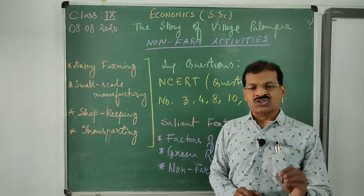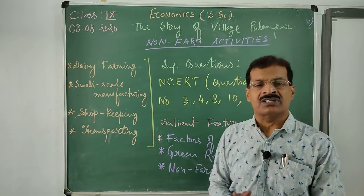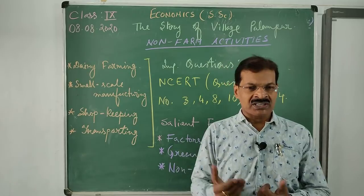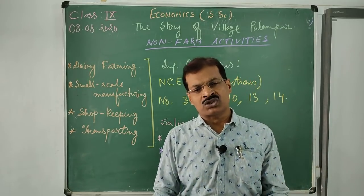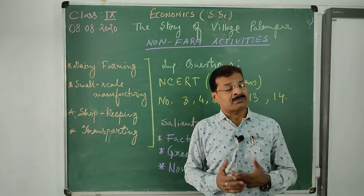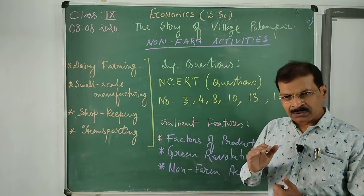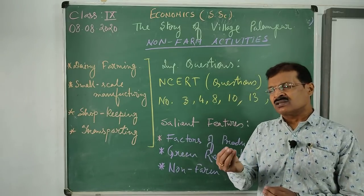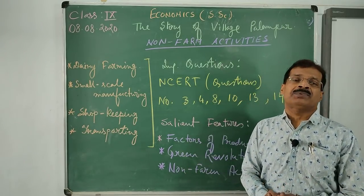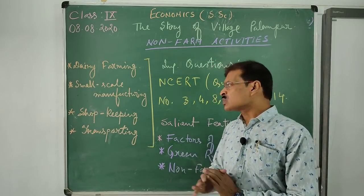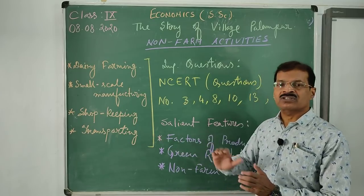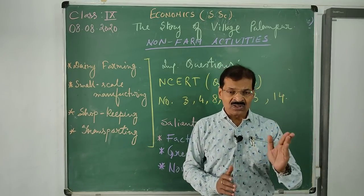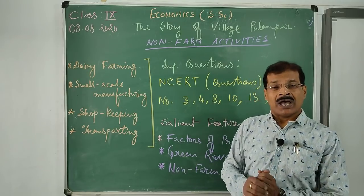These shops sell day-to-day needs from grocery items to stationery items, and most of the commodities are not very expensive. Some eatables were available near the bus stand - small hotel-like places, though not very established hotels. This is shopkeeping. Last but not least, transporting was also present in Palampur.